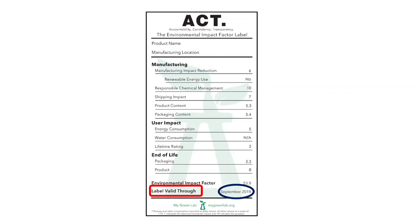All labels have an expiration date, or a 'label valid through' date. This is meant to drive continuous improvement in the laboratory products industry. We're hoping this will encourage manufacturers to look back at their scores and try to make improvements after two or three years.